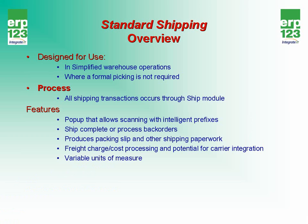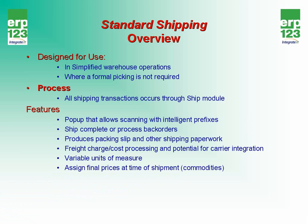You can process using variable units of measure — in other words, the unit of measure that is ordered, the unit of measure that is picked, or the unit of measure that the inventory is in normally. You can also assign final prices at the time of shipment, which is normally done in the case of commodities.